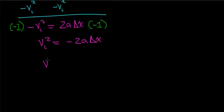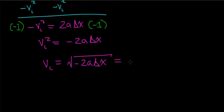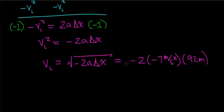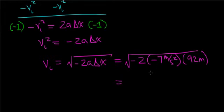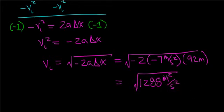The last step is to take the square root of both sides, so v_i = √(−2 · a · Δx). Plugging in the values: −2 times negative 7 meters per second squared times 92 meters. Notice you get a negative times a negative, which is positive. That gives 2 × 7 = 14, and 14 × 92 = 1288, with units of meter squared per second squared.